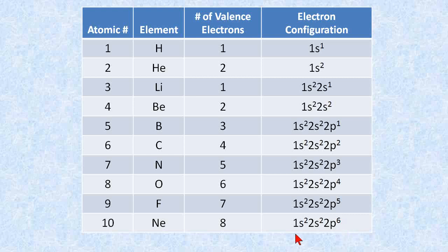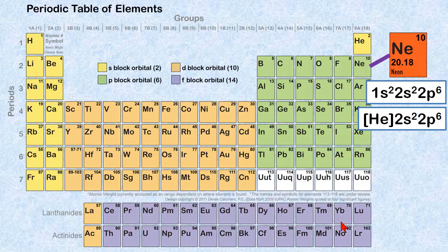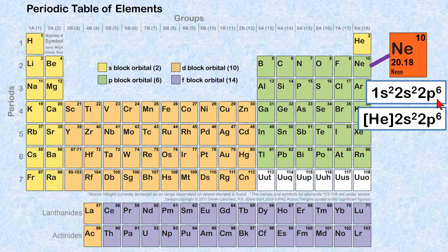And the electron configuration is 1s2, 2s2, 2p6. And this is how we can represent that. And here is on the periodic table.